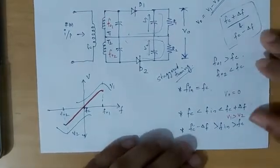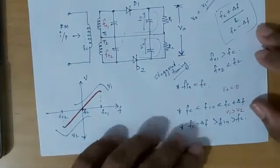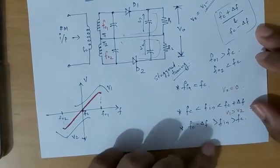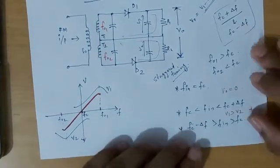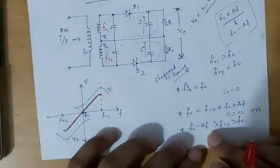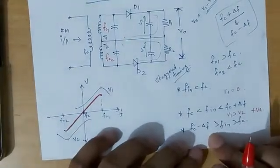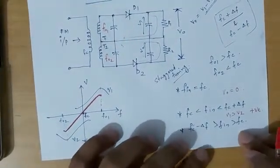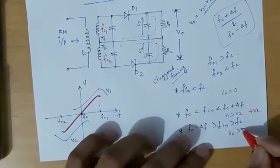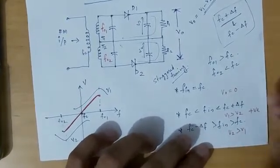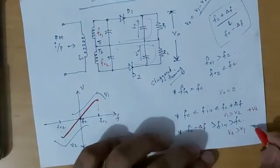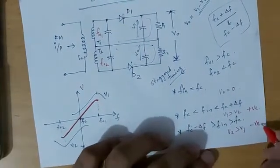The third condition is when the instantaneous frequency is less than Fc — that is Fc minus delta F. In this case the situation is opposite: the lower tuned circuit voltage dominates, and the net output voltage V0 is negative.